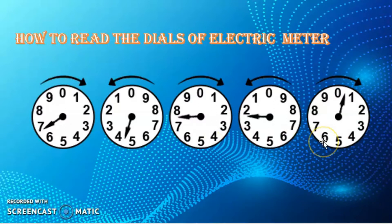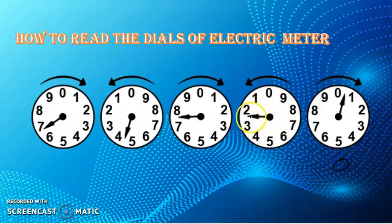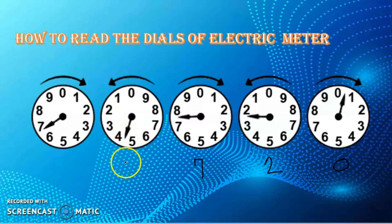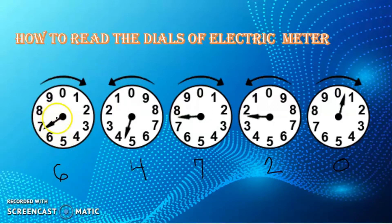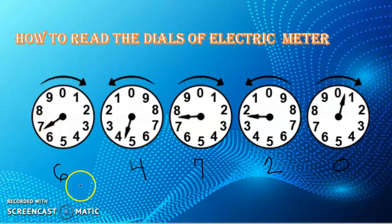How do we read the dials? When the hand is between two numbers — for example between zero and one — the lower number is zero, so you write zero. If it's between two and three, the lower is two. Between seven and eight, the lower is seven. Between four and five, the lower is four. Between six and seven, the lower is six. However, if the hand points exactly to a number, like exactly on seven, then you write seven. This example reads as 64,720 kilowatt-hours.